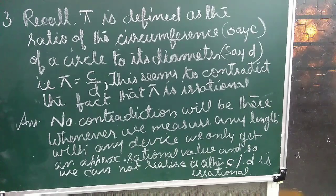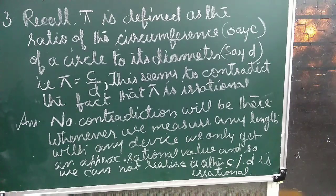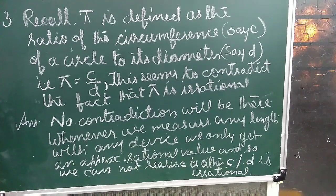Recall: pi is defined as the ratio of the circumference C of a circle to its diameter D, that is pi equals C upon D. This seems to contradict the fact that pi is irrational. There is no contradiction — whenever we measure any length with any device, we only get an approximate rational value, and so we cannot realize that either C or D is irrational.